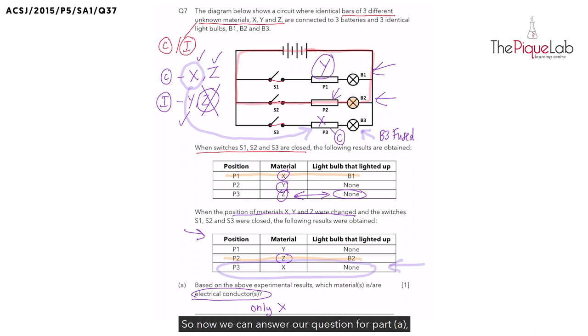So now we can answer our question. For part A, we have two electrical conductors, X and Z.